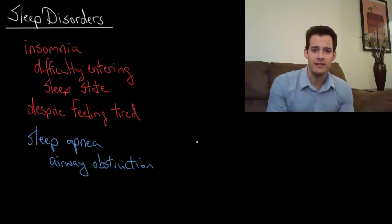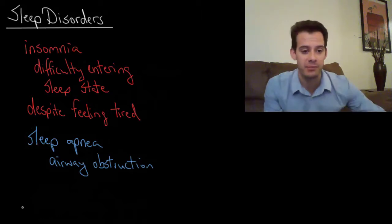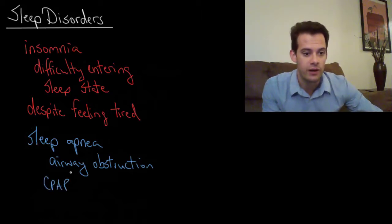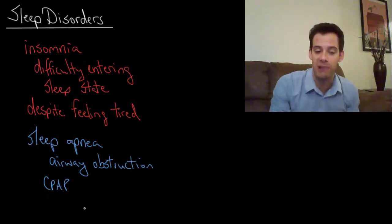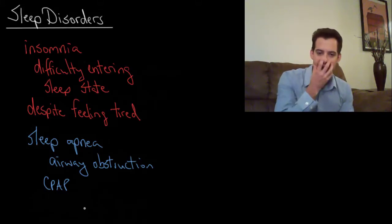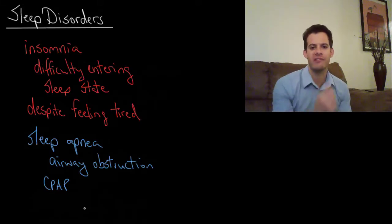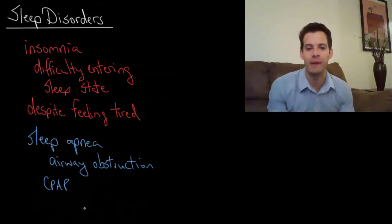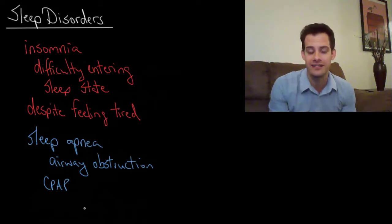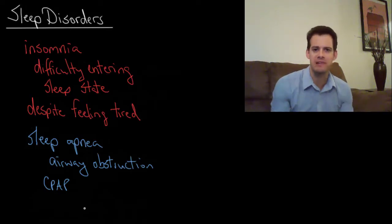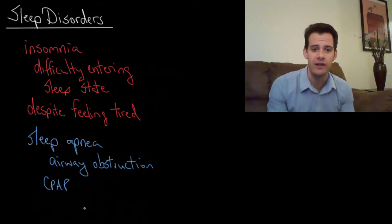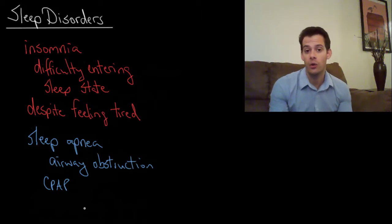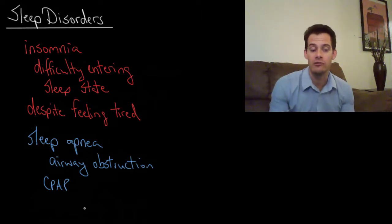Sleep apnea can be treated with a device called a CPAP machine, which stands for continuous positive airway pressure. A mask goes on the person's face connected to a machine that provides a little air pressure on the throat — just enough to keep the airway open while sleeping, so even when the muscles relax the person can breathe and stay asleep. Sleep apnea is also associated with obesity, and losing weight can help reduce the problem.